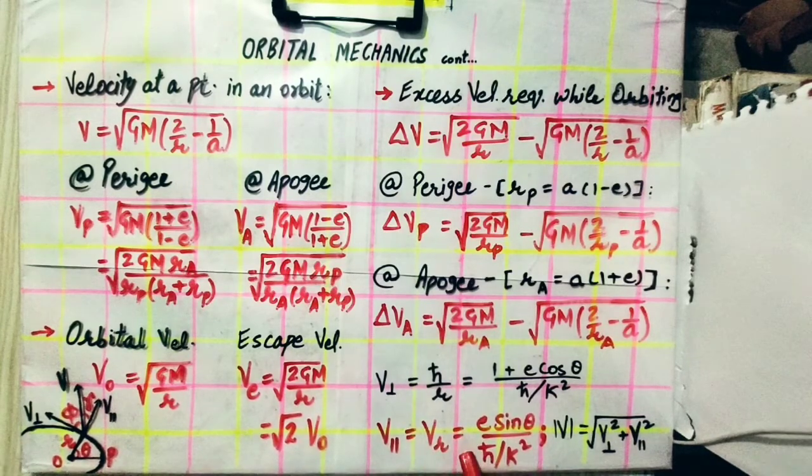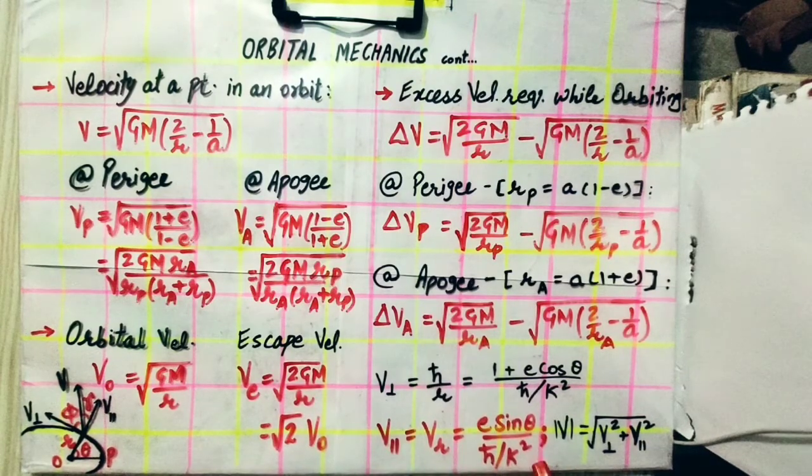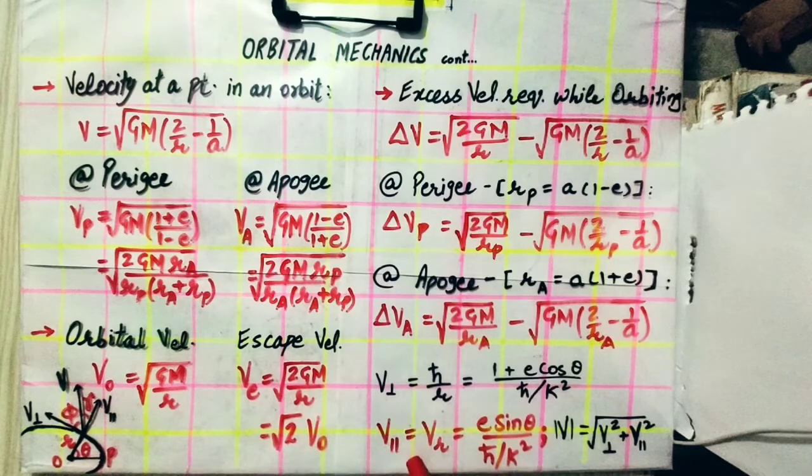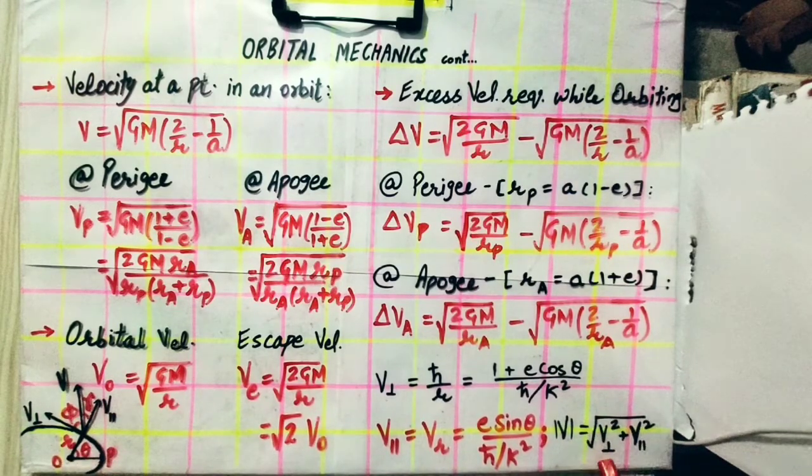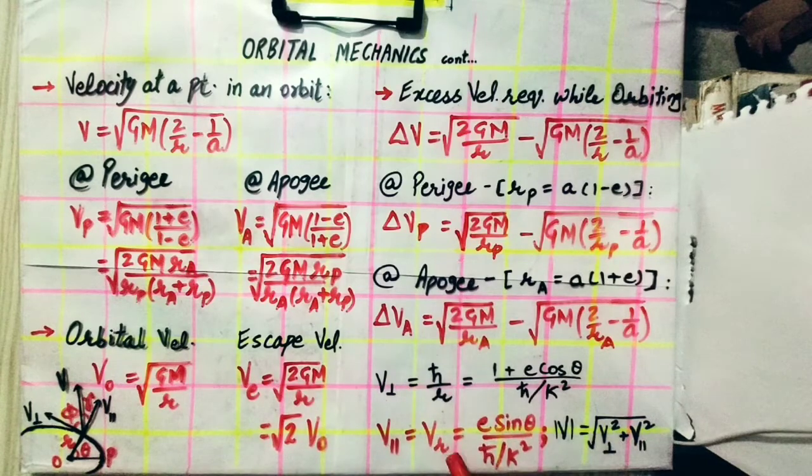V parallel equals v r equals e sin theta upon h by k square. And from both of these we can calculate this orbiting velocity magnitude by taking the sum of square of these velocities with under root over them. Thank you.